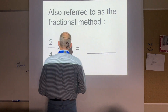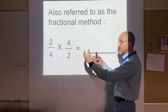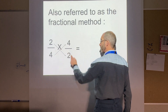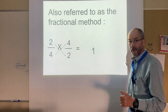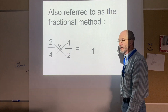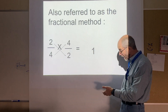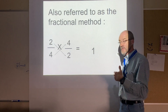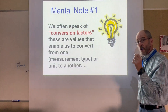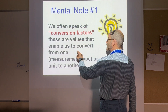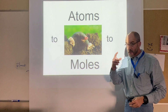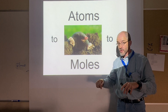You know from math that fractions can cross multiply — for example, two over four times four over two: the twos cancel and the fours cancel, giving an answer of one. In this unit we'll use the fractional method a lot because you'll be using the mole and 6.02 times 10 to the 23rd frequently, setting up problems and doing conversions. We often speak of conversion factors — values that enable us to convert from one measurement type or unit to another.